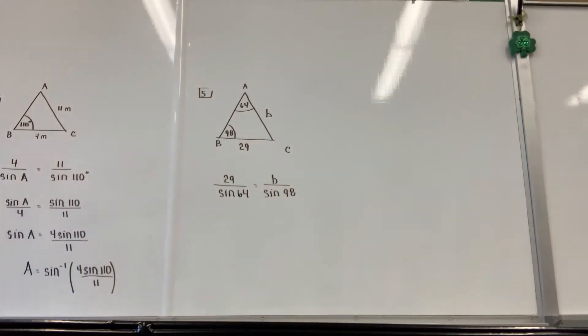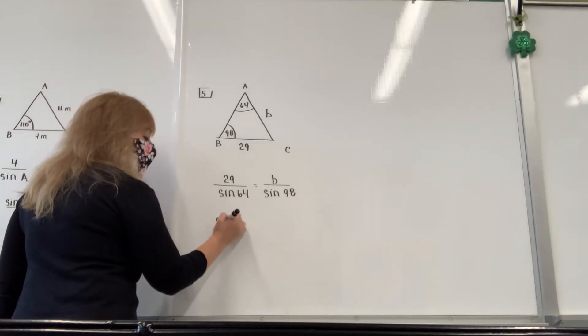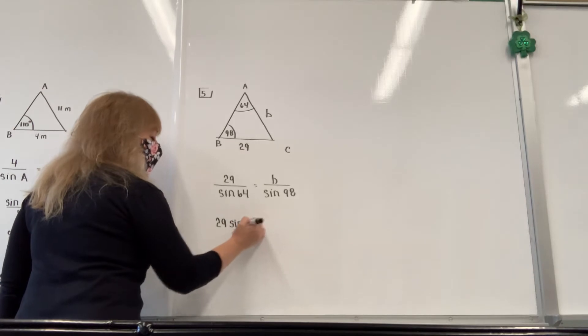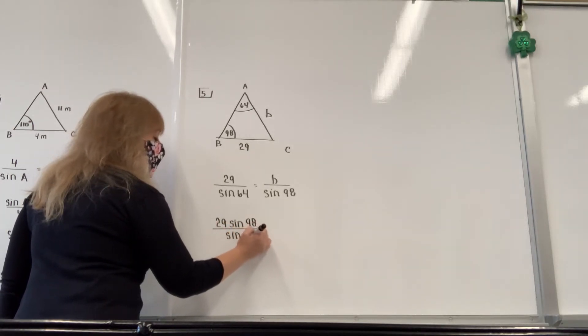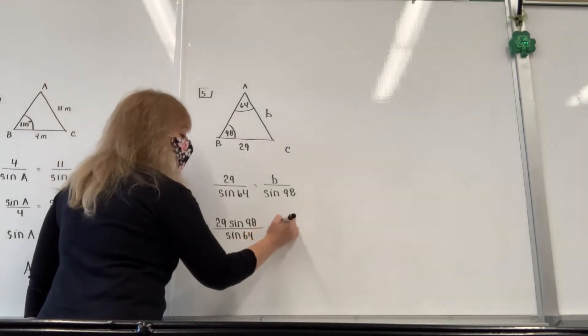And remember, you're only solving for b. So all you have to do is multiply both sides by the sine of 98. If you multiply the left side by the sine of 98, it is 29 sine of 98 divided by the sine of 64. And you cannot cancel anything. That's all you're going to get. And the right side, you're just going to get b.